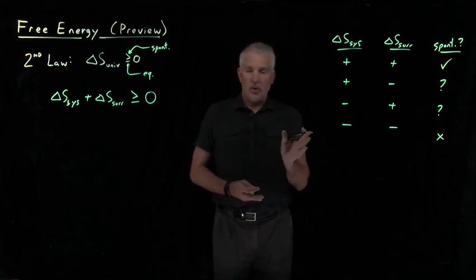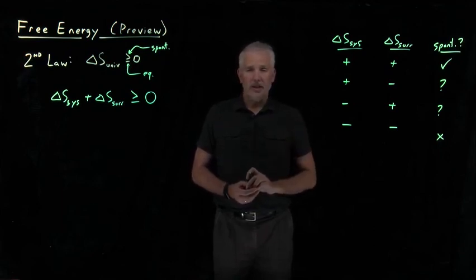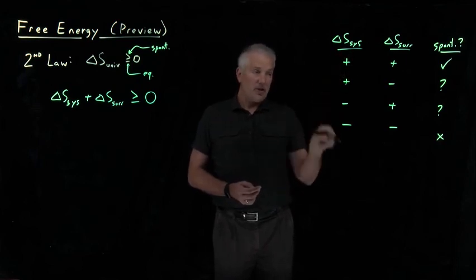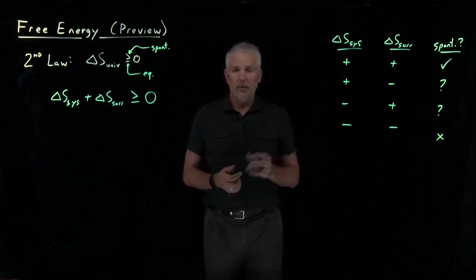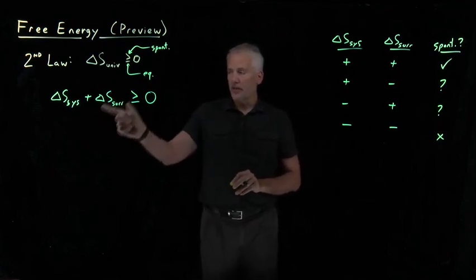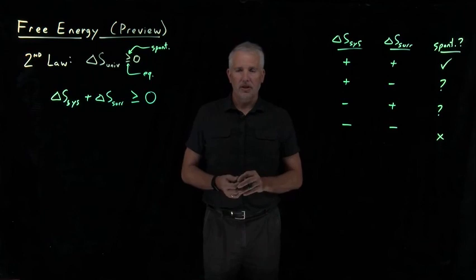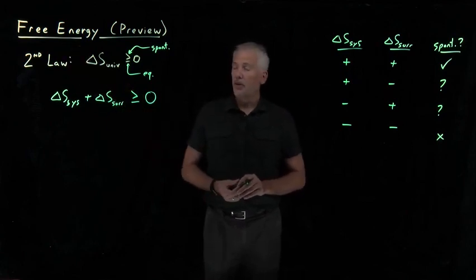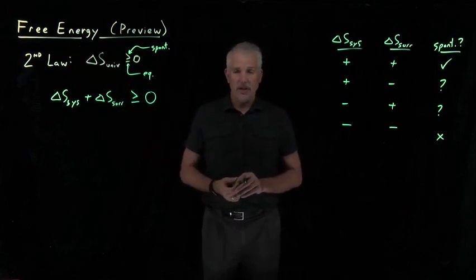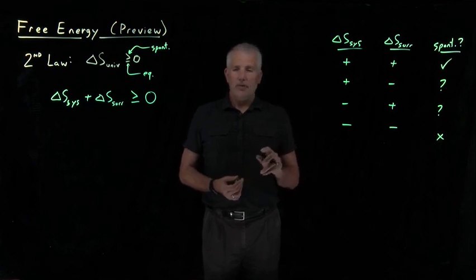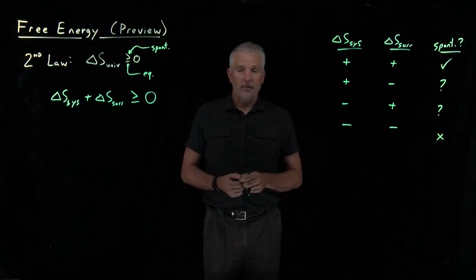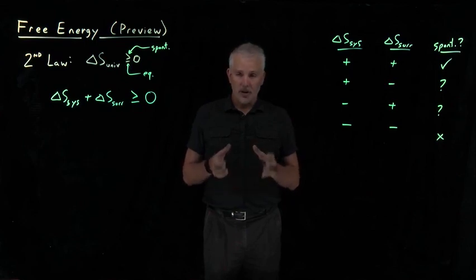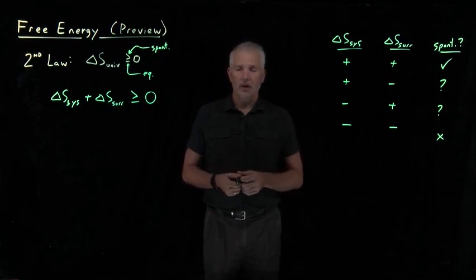So what we'd really like is to predict whether a process is spontaneous using only the properties of the system, without having to study the surroundings. Clearly we can't just use the entropy of the system, but our goal is to find some other property of the system. As suggested by the title of this video, it turns out to be something called free energy. If we define a new property called free energy, that property for just the system itself will allow us to predict whether a process is spontaneous or not. That's the direction we're heading next.